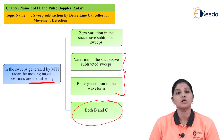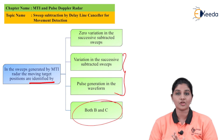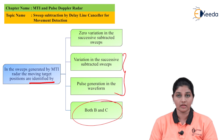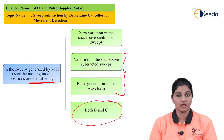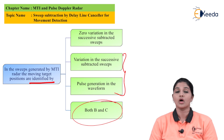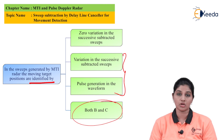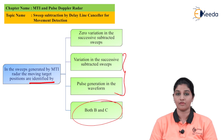This is what the delay line cancellers do in MTI radar — by using the subtraction method, the delay line canceller operates on the MTI radar receiver. In case of MTI radar, the delay line canceller acts as a Doppler filter. I hope you understand this topic of the delay line canceller used in the MTI radar receiver. Thank you very much for watching this video. Stay tuned to Ikeda. Subscribe to Ikeda. Thank you.